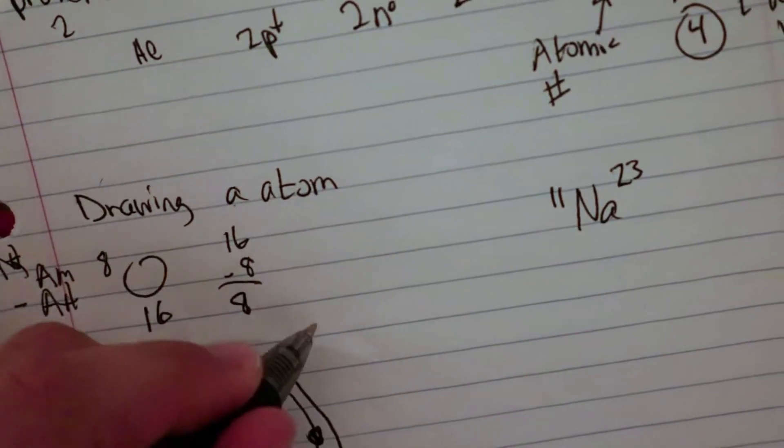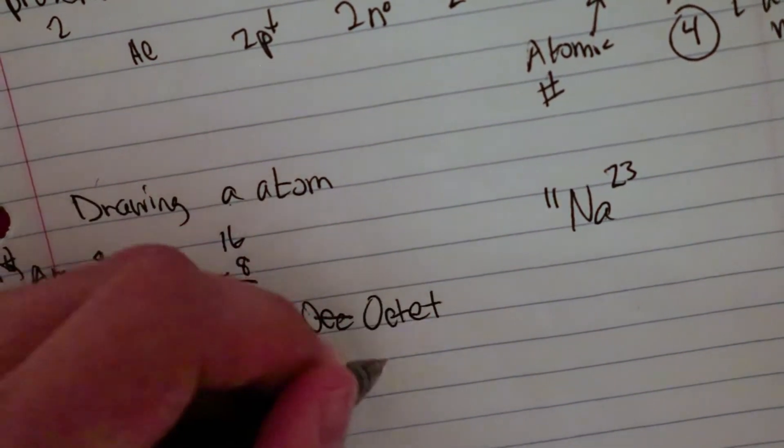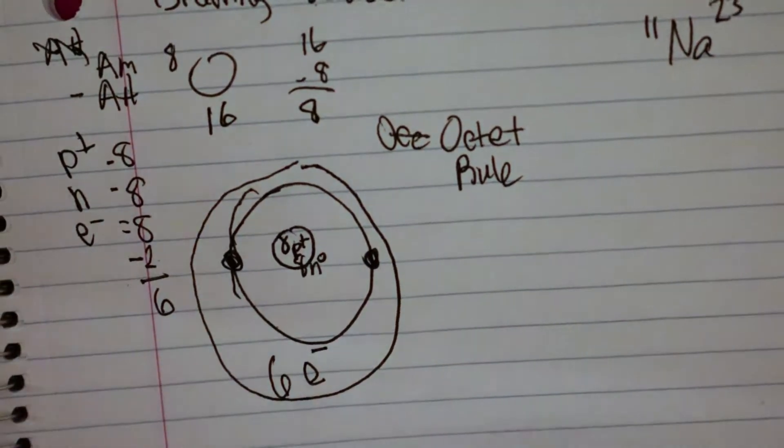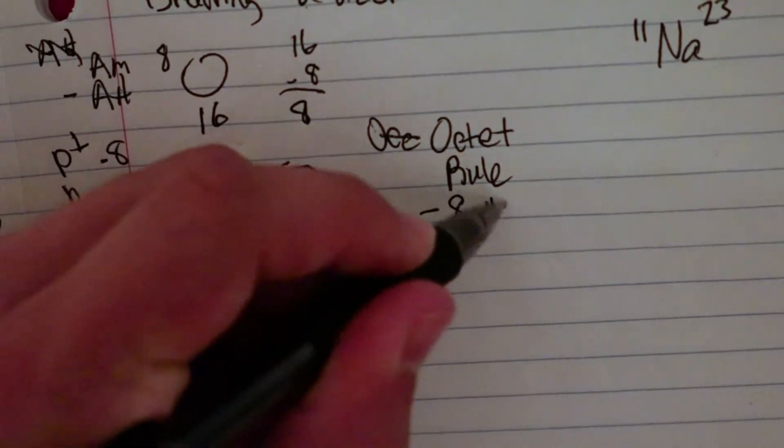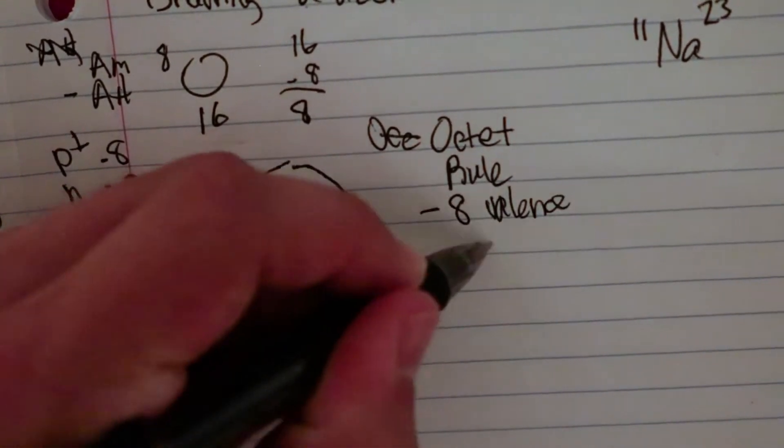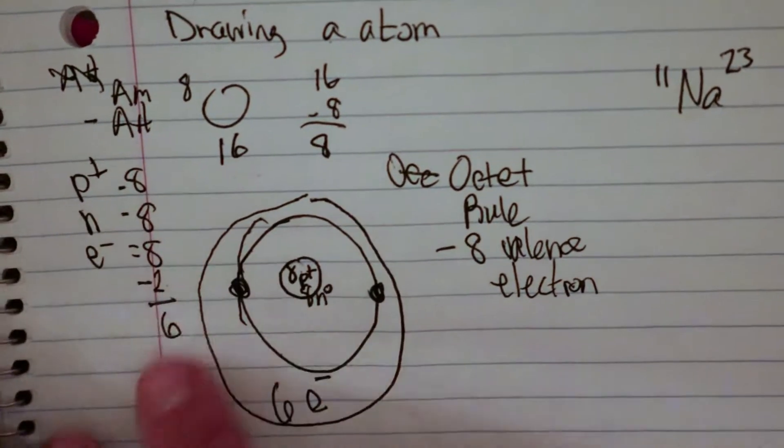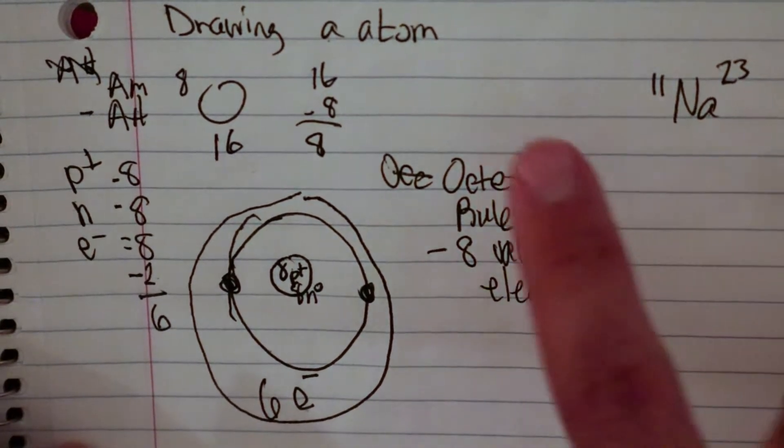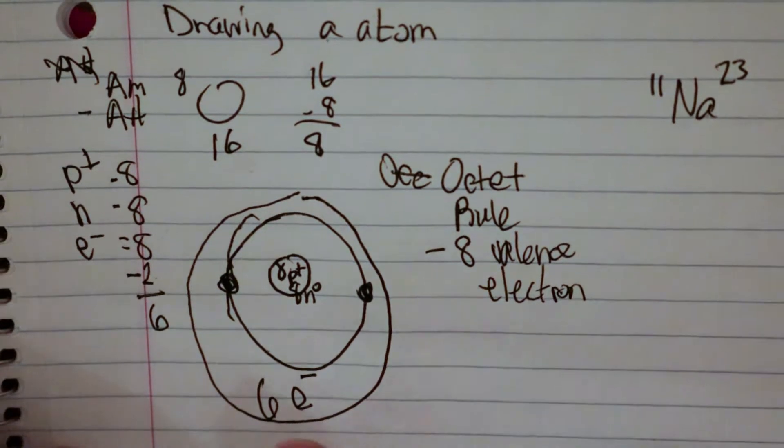Now if we think about the octet rule for a bit, the octet rule is that they want 8 valence electrons, so valence electrons are the electrons in the outer ring. So this outer ring has 6, and it would like 8, so oxygen here would like 2 more electrons.